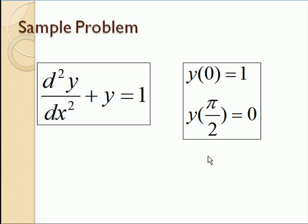Here's our sample problem, or we'll do two, here's our first one. y double prime plus y is 1, so it's a second order linear ODE. Our x will span from 0 to pi over 2. At the left edge, at x equals 0, we want y to be 1. At the right edge, at x equals pi over 2, we want y to be 0. So y of 0 is 1, y of pi over 2 is 0.